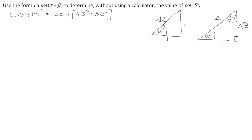The next step is to expand using the formula sheet. Looking at formula number 11, cos(45° − 30°) becomes: cos 45° · cos 30° plus sin 45° · sin 30°.